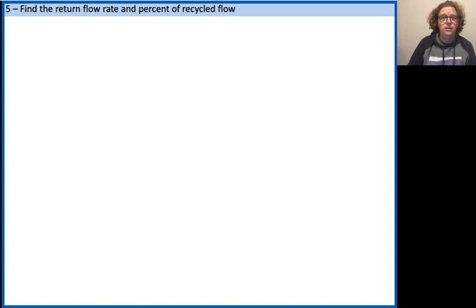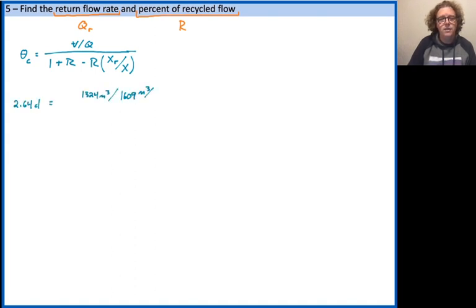All right, so the next question is about the return flow rate. So both how much is it qr and what fraction of the flow through the system will be recycled capital R? And we'll solve for that capital R first. And we've got an equation here that relates the mean cell residence time theta c to the hydraulic residence time in the numerator. And then down in the denominator 1 plus that percent minus that percent multiplied by the ratio between the volatile suspended solids concentration in the return flow, xr versus that in the aeration basin x. And we've got everything except for R.